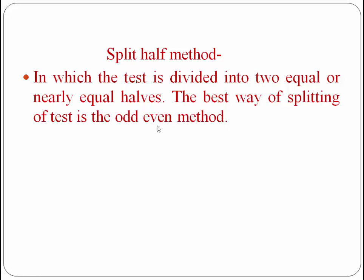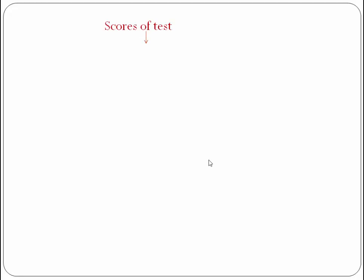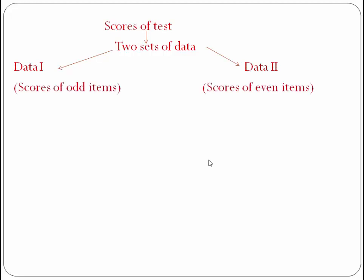In the odd-even method, odd-numbered items such as 1, 3, 5, 7, 9 constitute one part of the test, and even-numbered items such as 2, 4, 6, 8, 10 constitute another part of the test. We add all the odd-numbered item scores together and all the even-numbered item scores together. The test is administered once but the scores are divided into two halves, producing two sets of data: data first for odd item scores and data second for even item scores.